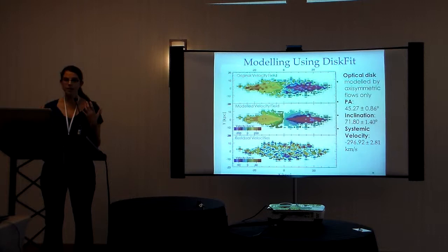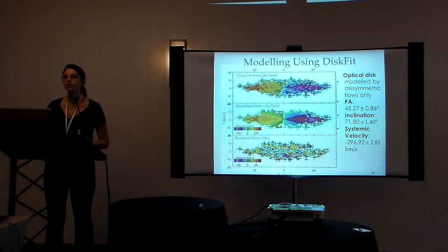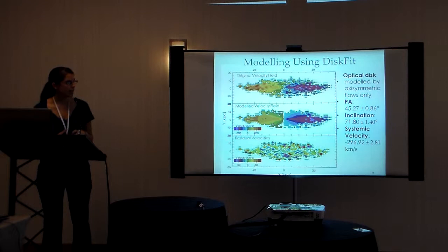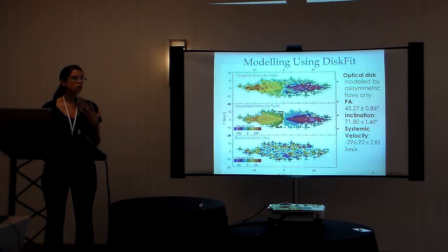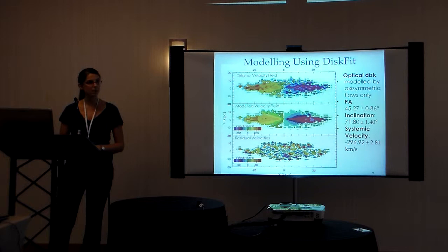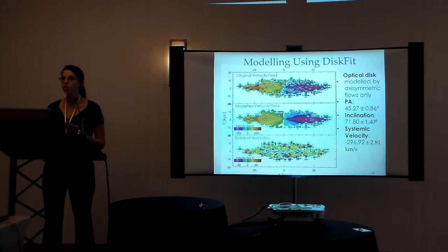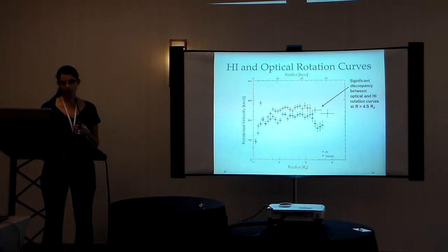And you can see this because the receding side, which is the yellow and the orange and red side, and the approaching side, which is the purple and blue side of the disk, are roughly symmetric. And you can see that this is quite a good fit to the data from the residual velocities. We see no large patterns that would indicate that there are m equals 1 or m equals 2 non-axisymmetric flows in the velocity field. And you do see a few small features, which indicate that the optical disk is quite turbulent.